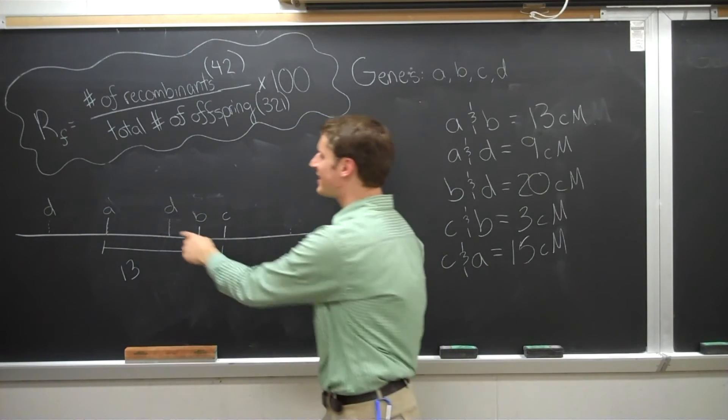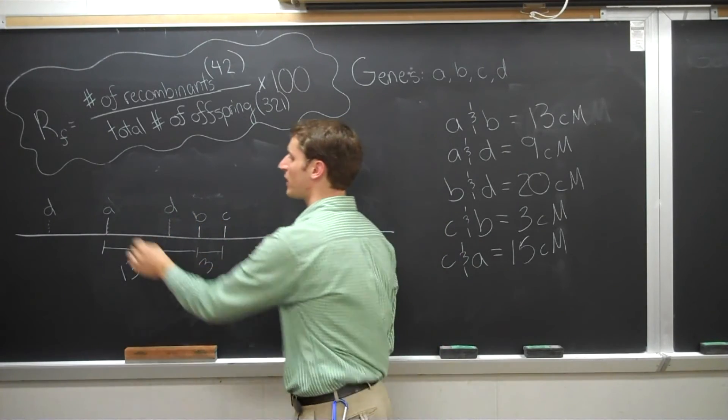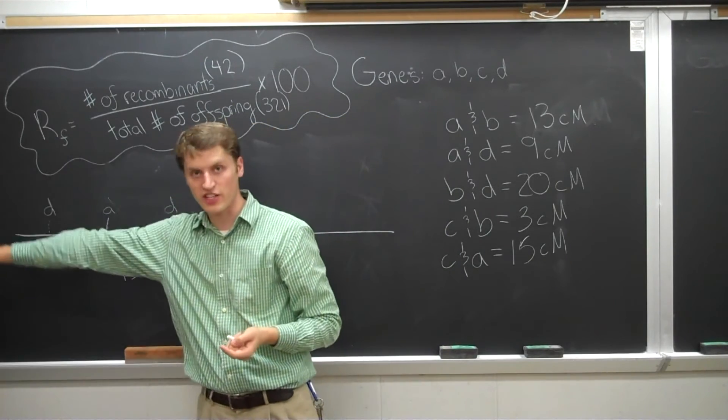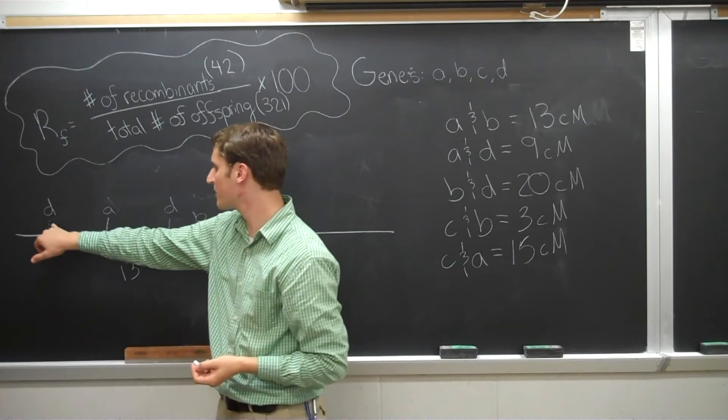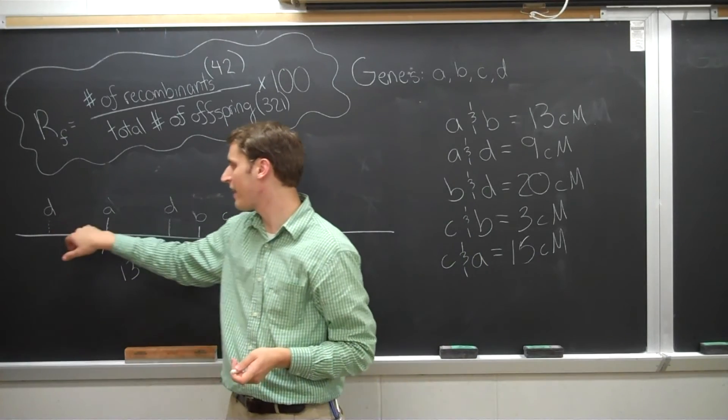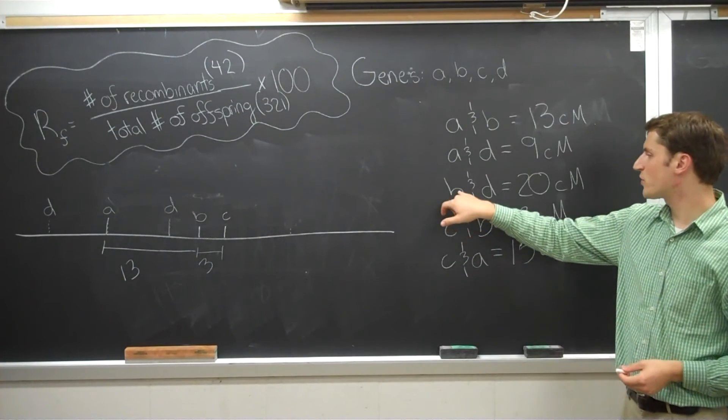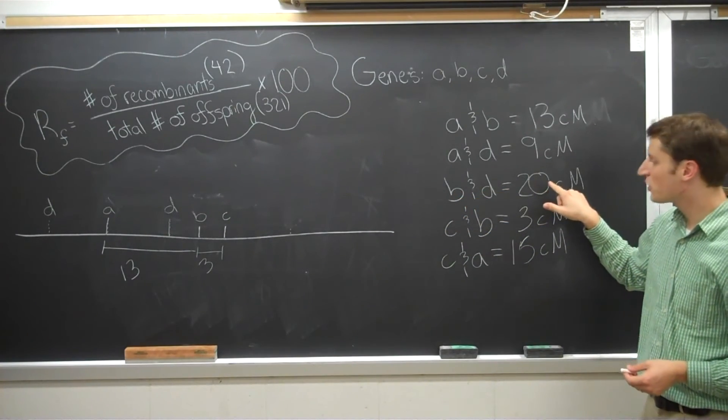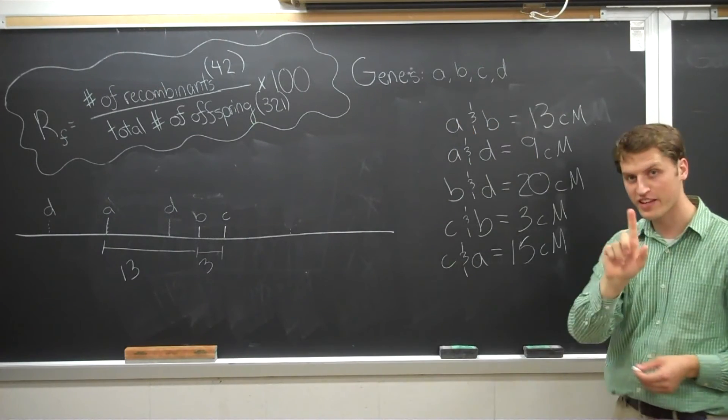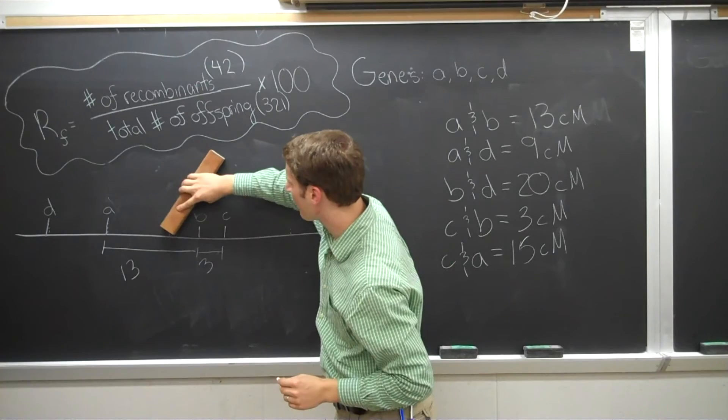In fact, we would say that the distance between D and B should be smaller than the distance between A and B, whereas if D is located on the far side, the distance between D and B should be larger than the distance between D and A. Look back at our data, and what do we have? The distance between B and D is in fact larger than the distance between B and A. That tells us this far location is the correct spot for D.